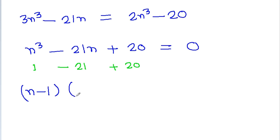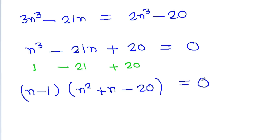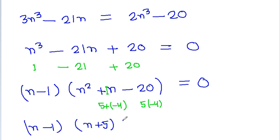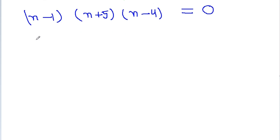Since n minus 1 is a factor, dividing we get (n minus 1)(n squared plus n plus 20). Further factoring gives roots n equals 1, n equals minus 5, and n equals 4.